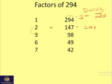Continuing, 7 also divides 294, and then 14 times 21 is 294. We skip 15 since 5 is not a factor, and 16 and 18 are also skipped since 8 is not a factor. We stop once we reach 21. In total, 294 has 12 factors.